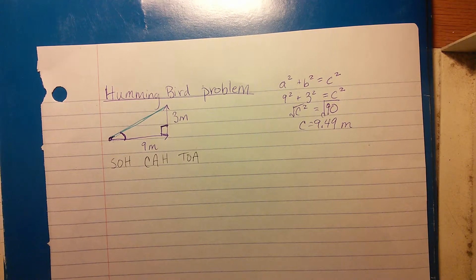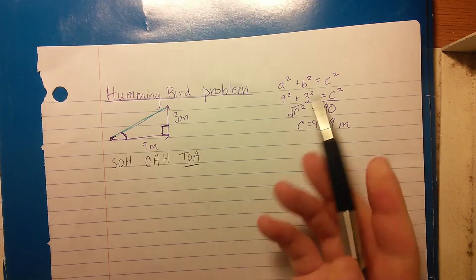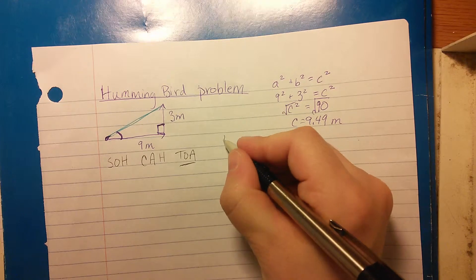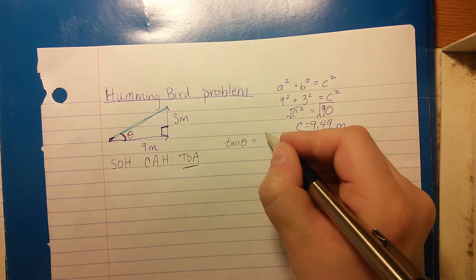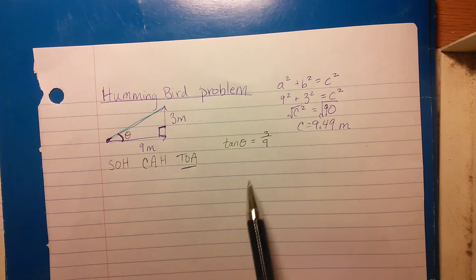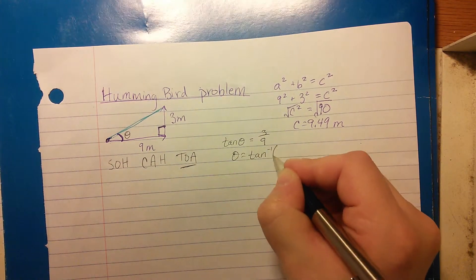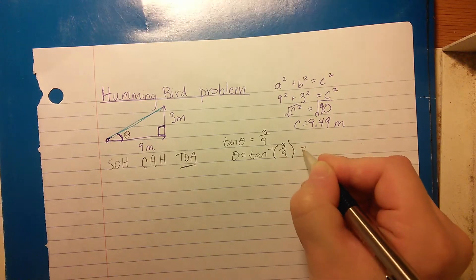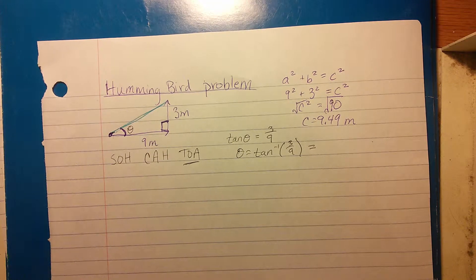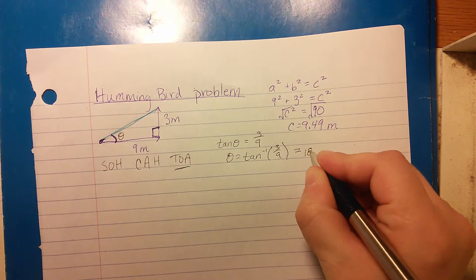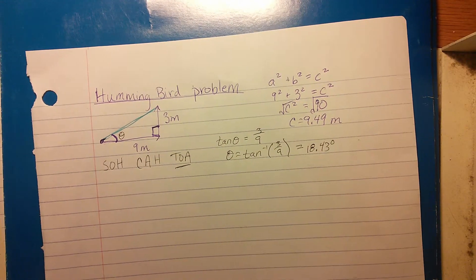Which one do we want to use here? We want to use tangent because we want to do opposite over adjacent. So here what we have is the tangent of this angle is equal to 3 over 9. So the angle is going to be equal to the inverse tangent of 3 over 9, and for that you should get 18.43 degrees.